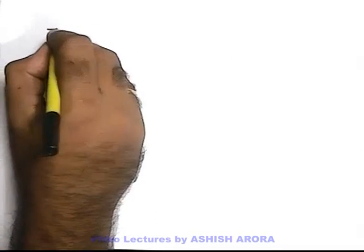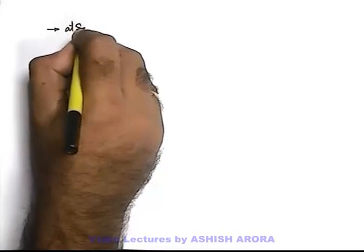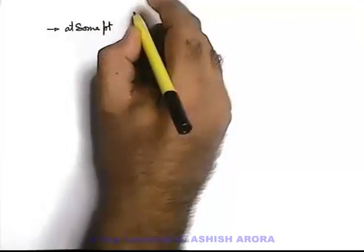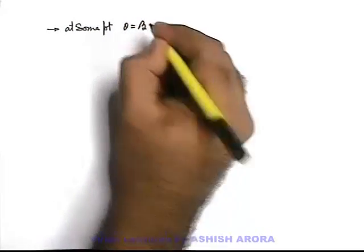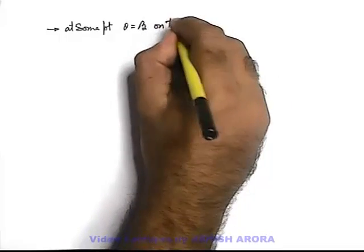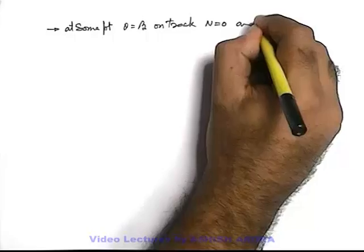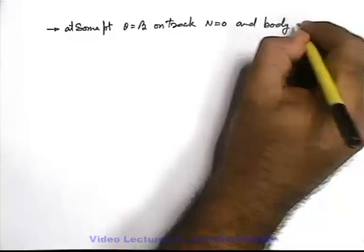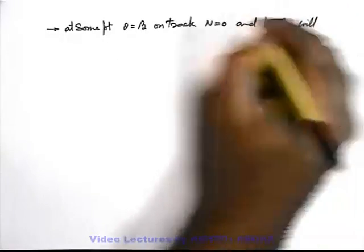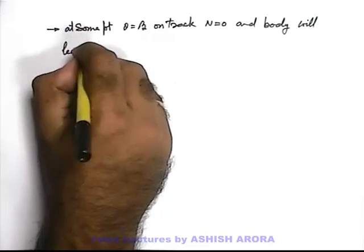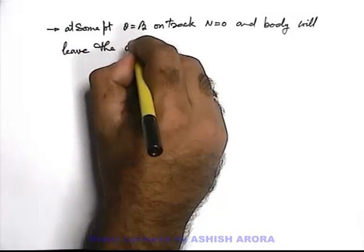Let at some point theta equals beta on track, N becomes zero, and body will leave the circular track.